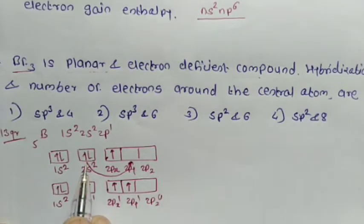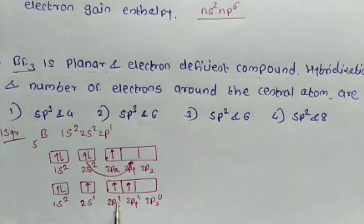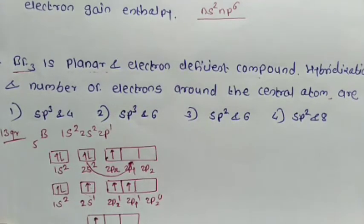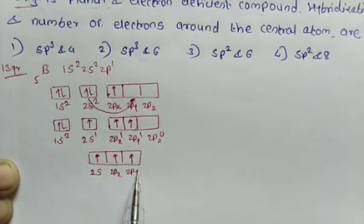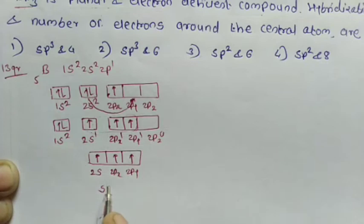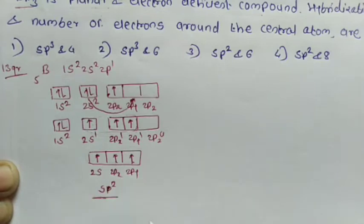The 2s, 2px, and 2py orbitals — containing 1 electron in s and 2 electrons in p — combine together. One electron in the s orbit and two electrons in the p orbit hybridize to form sp2. Therefore, the hybridization state of BF3 is sp2.